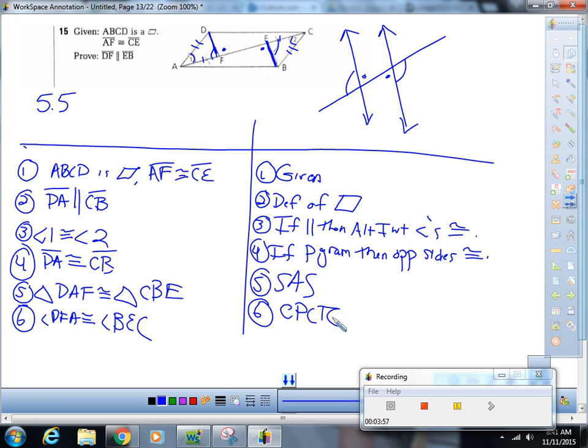And now, I can say that DF is congruent to EB, sorry, not congruent,